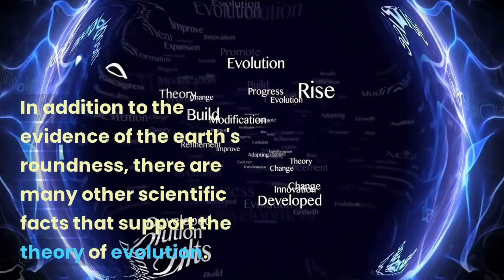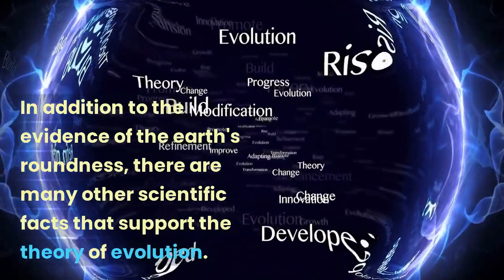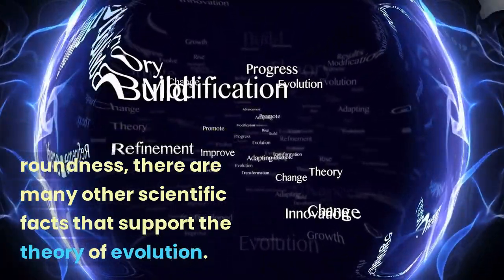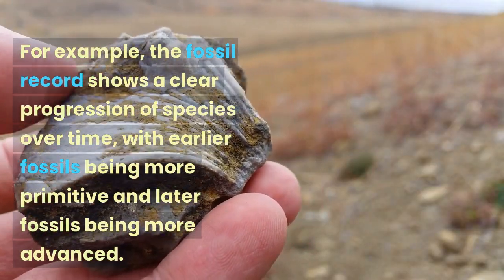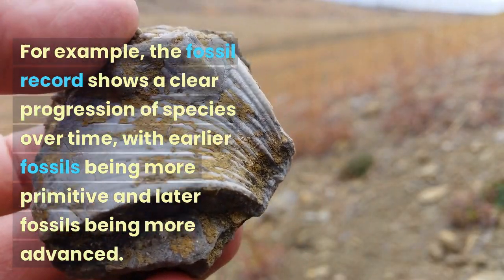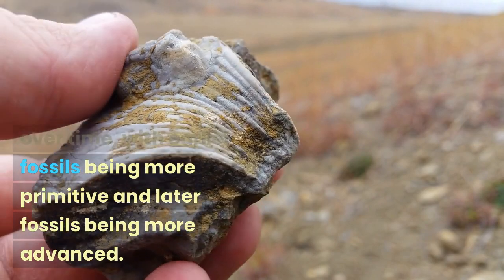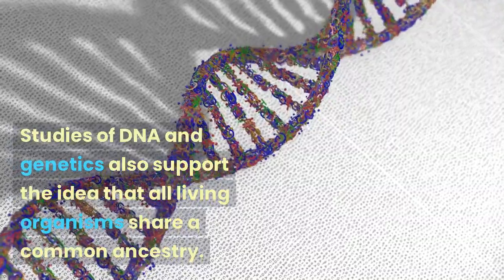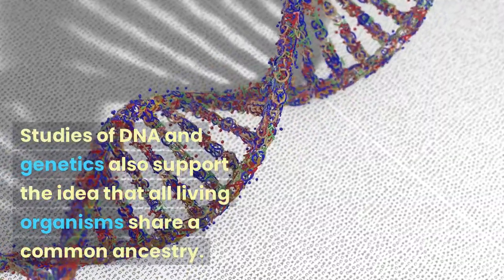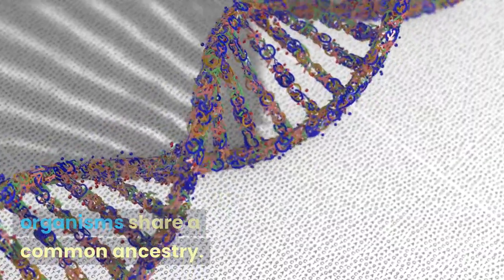In addition to the evidence of the Earth's roundness, there are many other scientific facts that support the theory of evolution. For example, the fossil record shows a clear progression of species over time, with earlier fossils being more primitive and later fossils being more advanced. Studies of DNA and genetics also support the idea that all living organisms share a common ancestry.